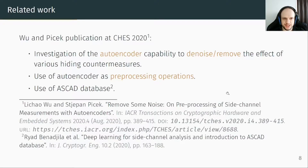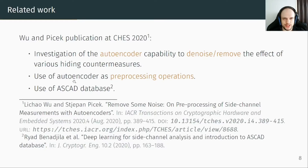There already exist some related works. In the Wu and PSEC publication, the authors investigate the autoencoder capability to denoise and remove the effect of various hiding countermeasures. In their work, they used an autoencoder as a preprocessing operation and the ASCAD database — a dataset aimed at providing a benchmark reference for the side-channel community, open-sourced by the French ANSSI. Our approach is different because we do not require noisy traces, but just traces from a domain that is easier to attack.